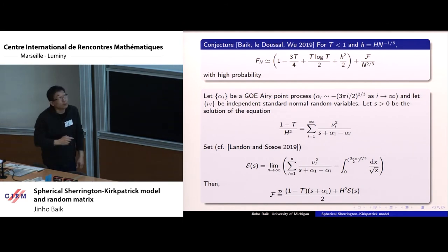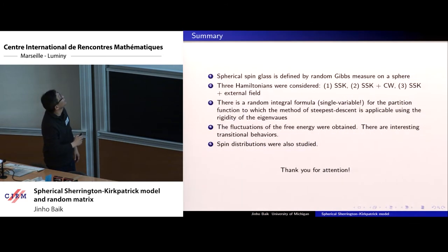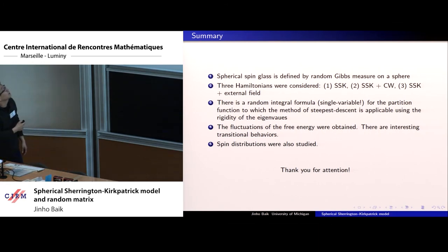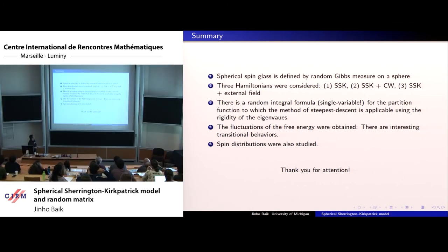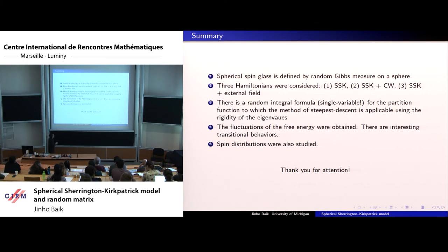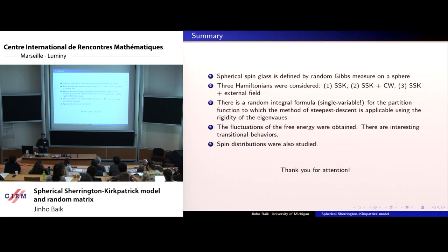There is also a spin distribution part that we skip due to time. In summary: spherical spin glass is defined by a random Gibbs measure on the sphere. We considered three Hamiltonians — SSK, SSK plus quadratic (Curie-Weiss), and SSK plus linear (external field). The key tool is a random single-integral representation of the partition function, which can be analyzed using random matrix theory, specifically eigenvalue rigidity and linear statistics results. This yields fluctuation results for the free energy and reveals interesting phase transitions. Thank you for your attention.